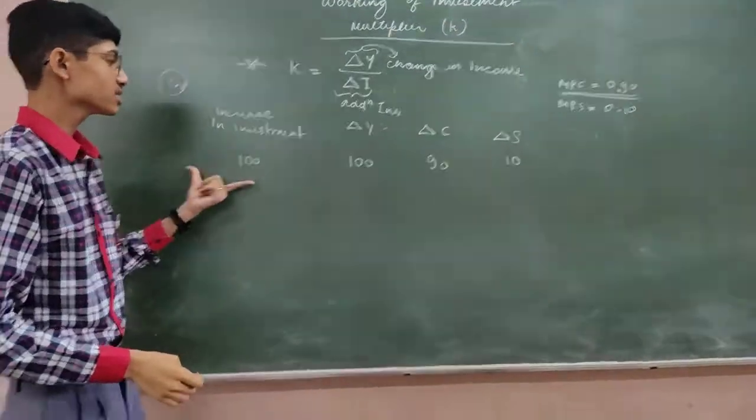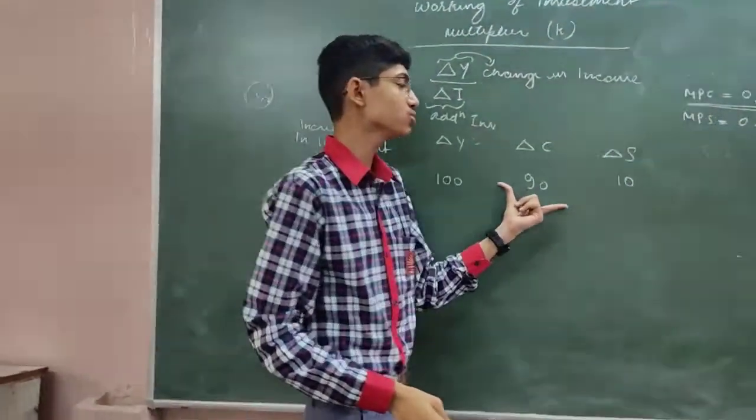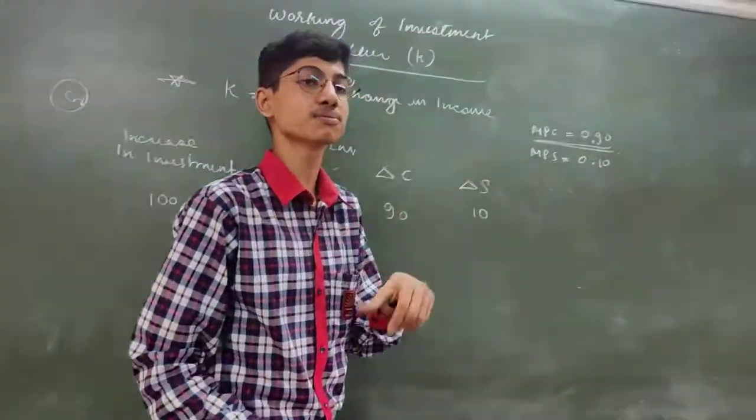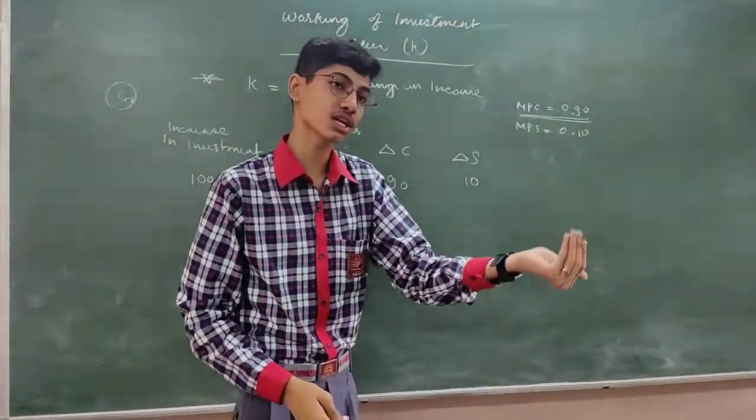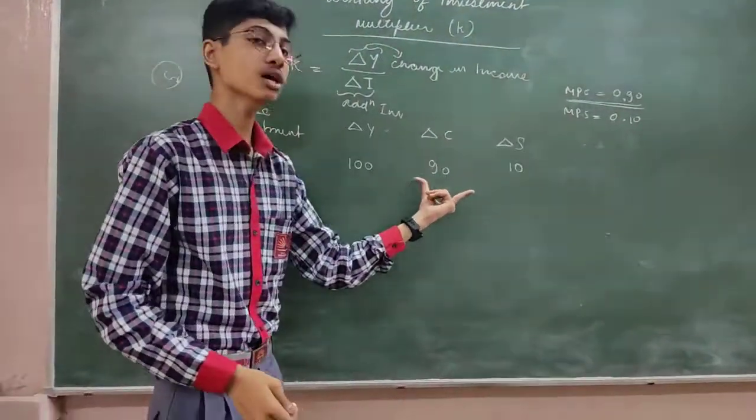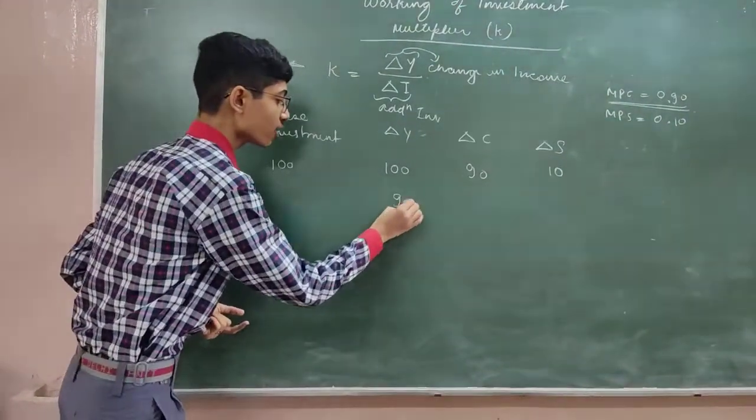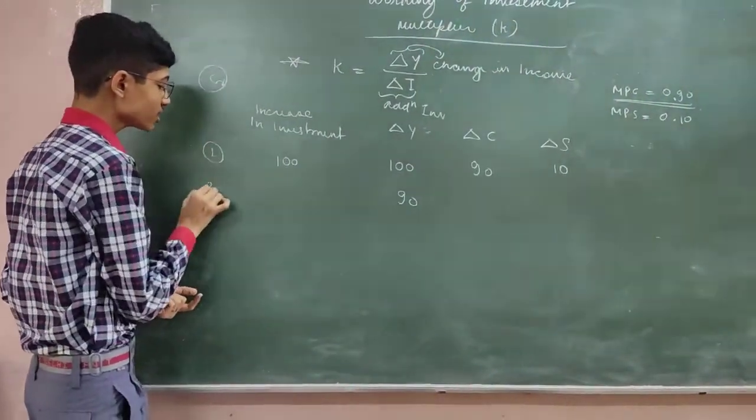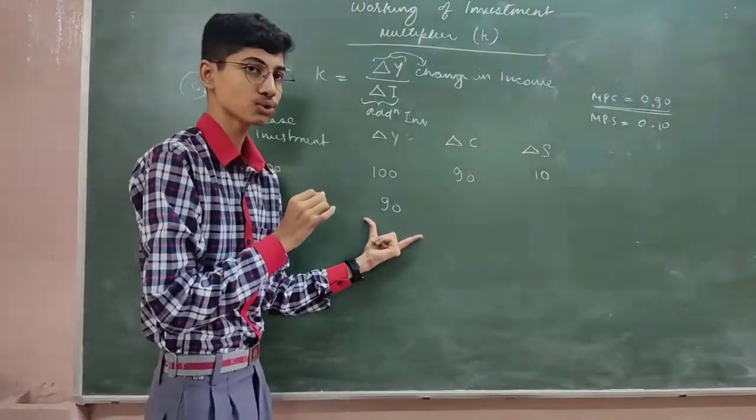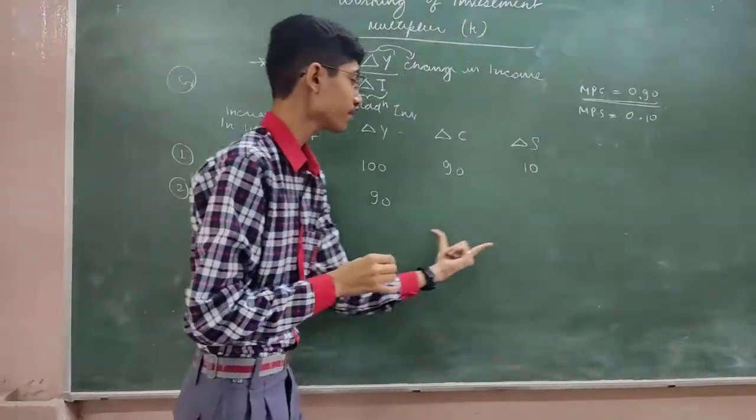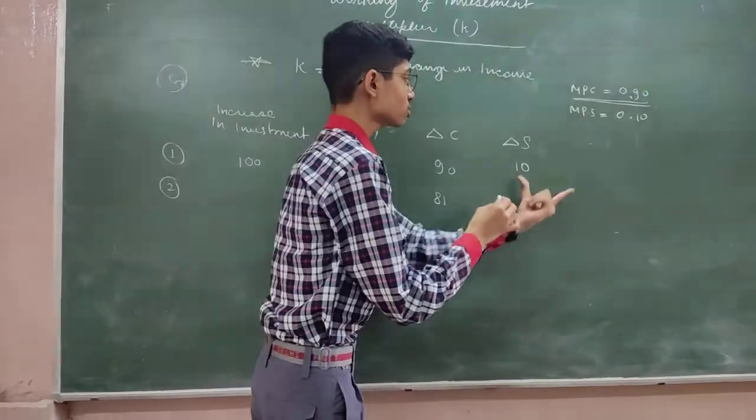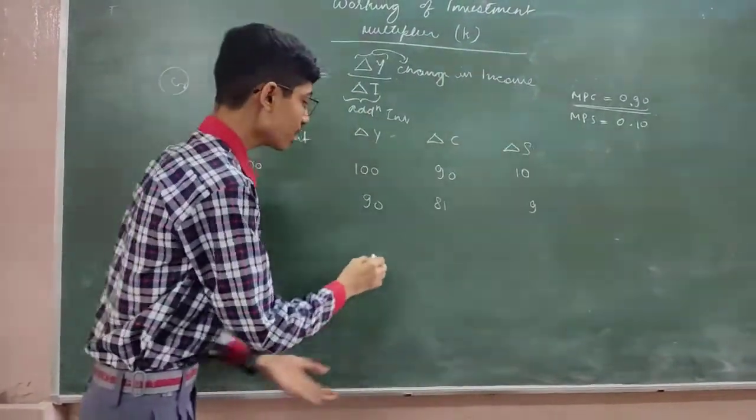Next round. I have invested 100 crores, and that becomes consumption. This is my consumption, I have given my money. That was the income, so that's 90 crores. Now, what will it be? Consumption. To answer the second round, we will calculate the third round. We will get 81 crores.